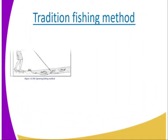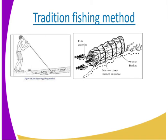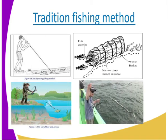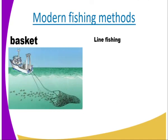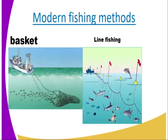Now let us look at the different methods of fishing. We have the line fishing, the hook, and basket fishing — those are the traditional methods that were used initially. We can also have the modern type of fishing, where we have the trawl net or the line net, which allows getting a large number of fish at the same time.